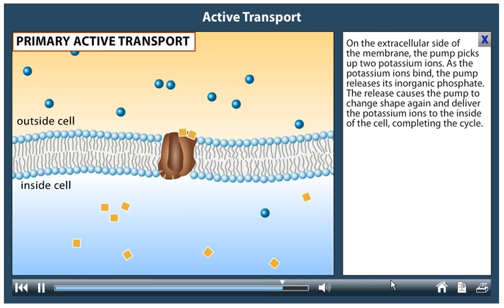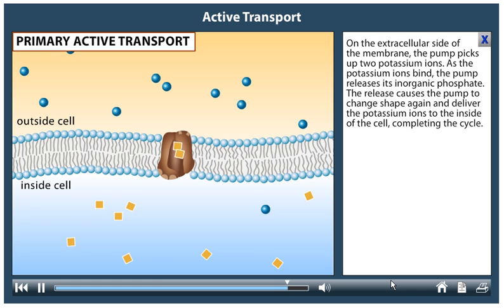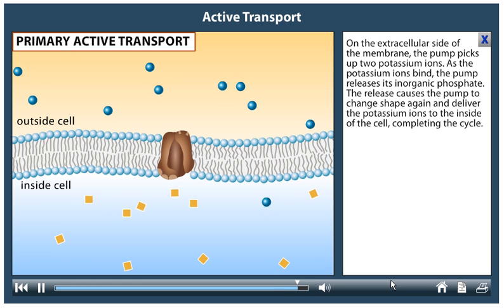The release causes the pump to change shape again and deliver the potassium ions to the inside of the cell, completing the cycle.